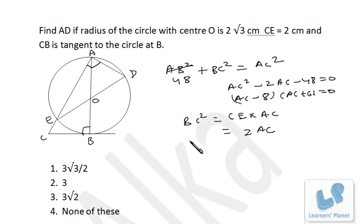BC² = 2AC, so 2 × 8 = 16. We got AC = 8, CE = 2, that means AE is 6. ED we know is 4√3.